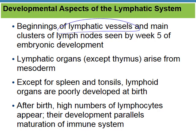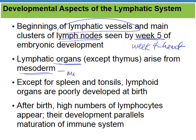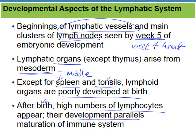The beginnings of the lymphatic system and lymph nodes are seen by week five, right after week four when heart development occurs. Lymphatic organs arise from mesoderm. The spleen and tonsils work well when you're first born, but everything else is poorly developed and needs more time to develop. High numbers of lymphocytes appear right after birth, and their development parallels the immune system — more lymphocytes, more exposure to foreign versus self, helping create a healthy immune system.